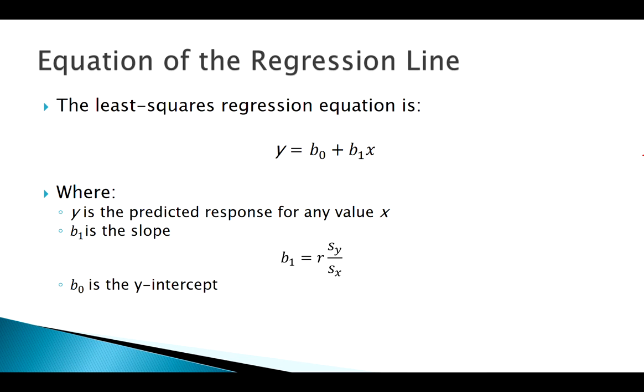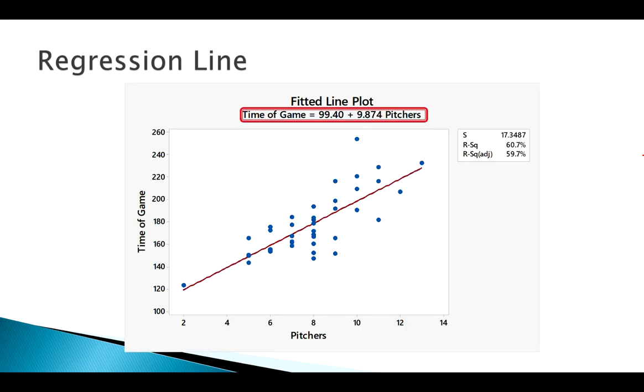b₀ there is our y-intercept. Usually that's calculated by finding the slope first, then solving for the y-intercept using the mean of x and the mean of y. These are ways of calculating b₀ and b₁, but like r, because there's a lot that goes into calculating that, we usually just leave that up to a computer.